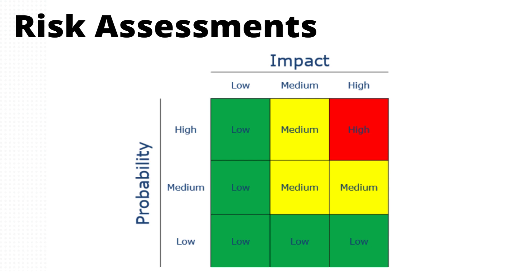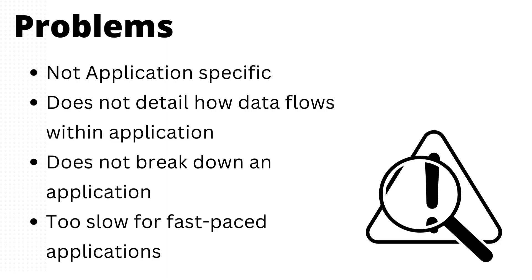You must have seen the risk matrix — probability of how often a risk can happen versus the impact if it does, and based on that you assign a risk level. That's how risk assessments work. However, the problems with risk assessments are that they are not application-specific. They are traditionally very high-level and do not tell you how an application is working or how data is flowing. They are also too slow for fast-paced environments with 50 to 60 applications coming in a month.